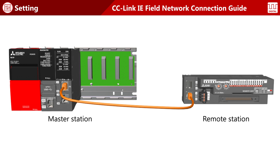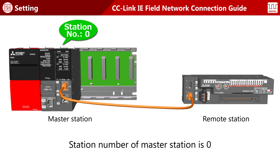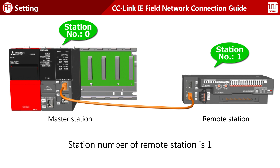The system shown here is configured with two stations. The station number of the master station is always fixed to zero. For the remote station, set the station number to one. Input and output signals are assigned between the master and remote stations.